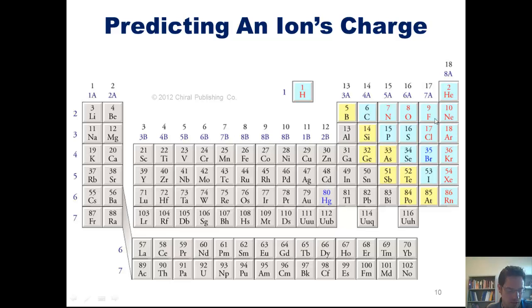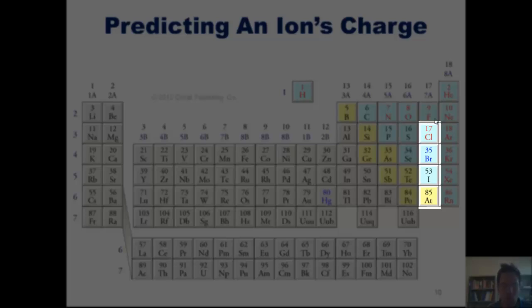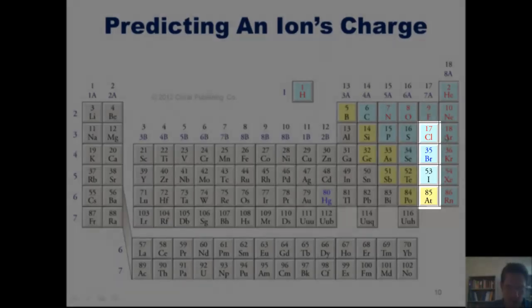By similar logic, fluorine would want to gain just one electron, feeling like an F- ion, which doesn't really sound like a very good grade at school, but is a wonderful grade if you're a fluorine atom. Chlorine, bromine, iodine, and astatine also similarly want to gain one electron so that they can each feel like the corresponding noble gases in column 8A that they are next to.